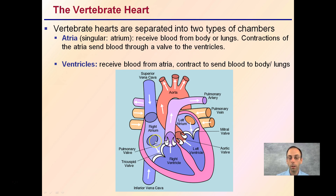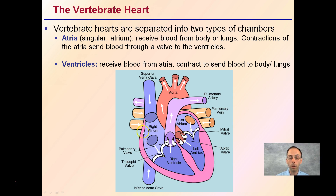The ventricle portions receive blood from the atria and contract to send blood to the body or the lungs. The muscles of the ventricles are much larger than that of the atria.